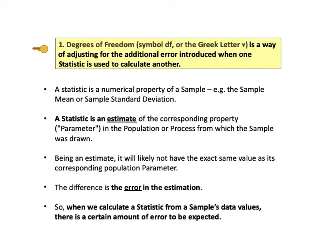This would be the so-called error involved in using sample numbers rather than the numbers from the full population. Being an estimate, it will likely not have the same value as a corresponding population parameter. The difference is the error in the estimation. Now, error is an unfortunate choice of terminology because no mistake has been made. Just practical limitations of our survey forced us to survey a sample rather than the entire population.